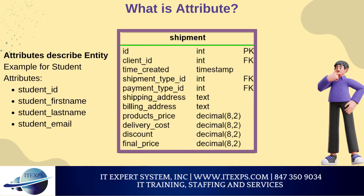What is an attribute? An attribute is a description of the properties of an entity or relationship. For instance, the entity shipment could have attributes such as shipment ID, client ID, shipment time created, billing address, etc. In the crow's foot notation, an attribute is represented as a line of text in the lower compartment of the corresponding entity's rectangle.